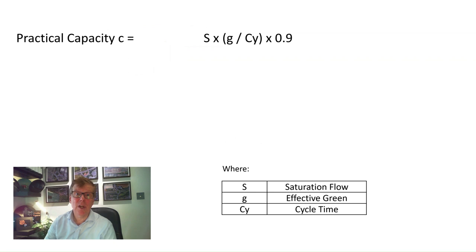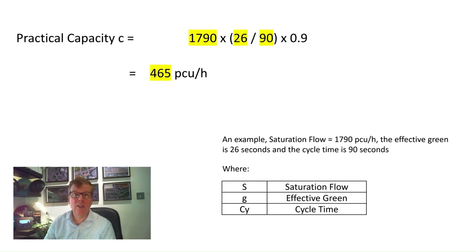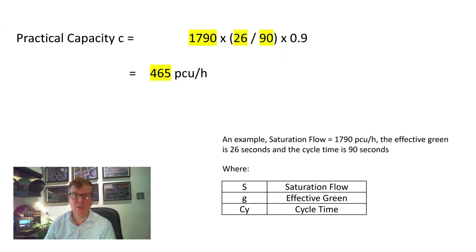As discussed under degree of saturation, we use a 90% maximum in design parameters, so practical capacity incorporates this assumption. To calculate practical capacity, we multiply capacity by 0.9. Using the same values — sat flow of 1,790 PCUs/hr, effective green of 26 seconds, cycle time of 90 seconds — multiplied by 0.9 gives 465 PCUs per hour, a reduction of 52 PCUs per hour from the capacity figure.